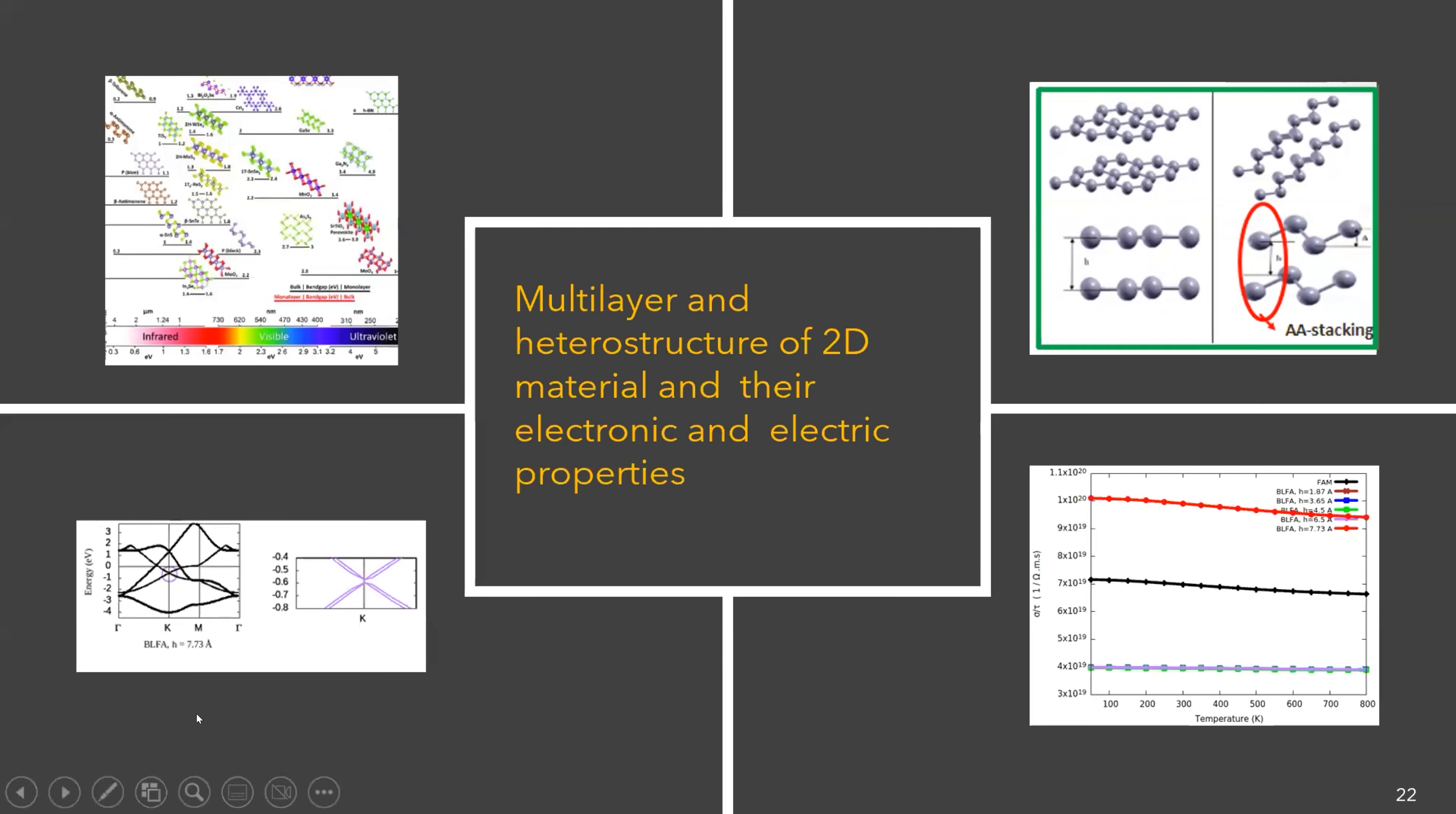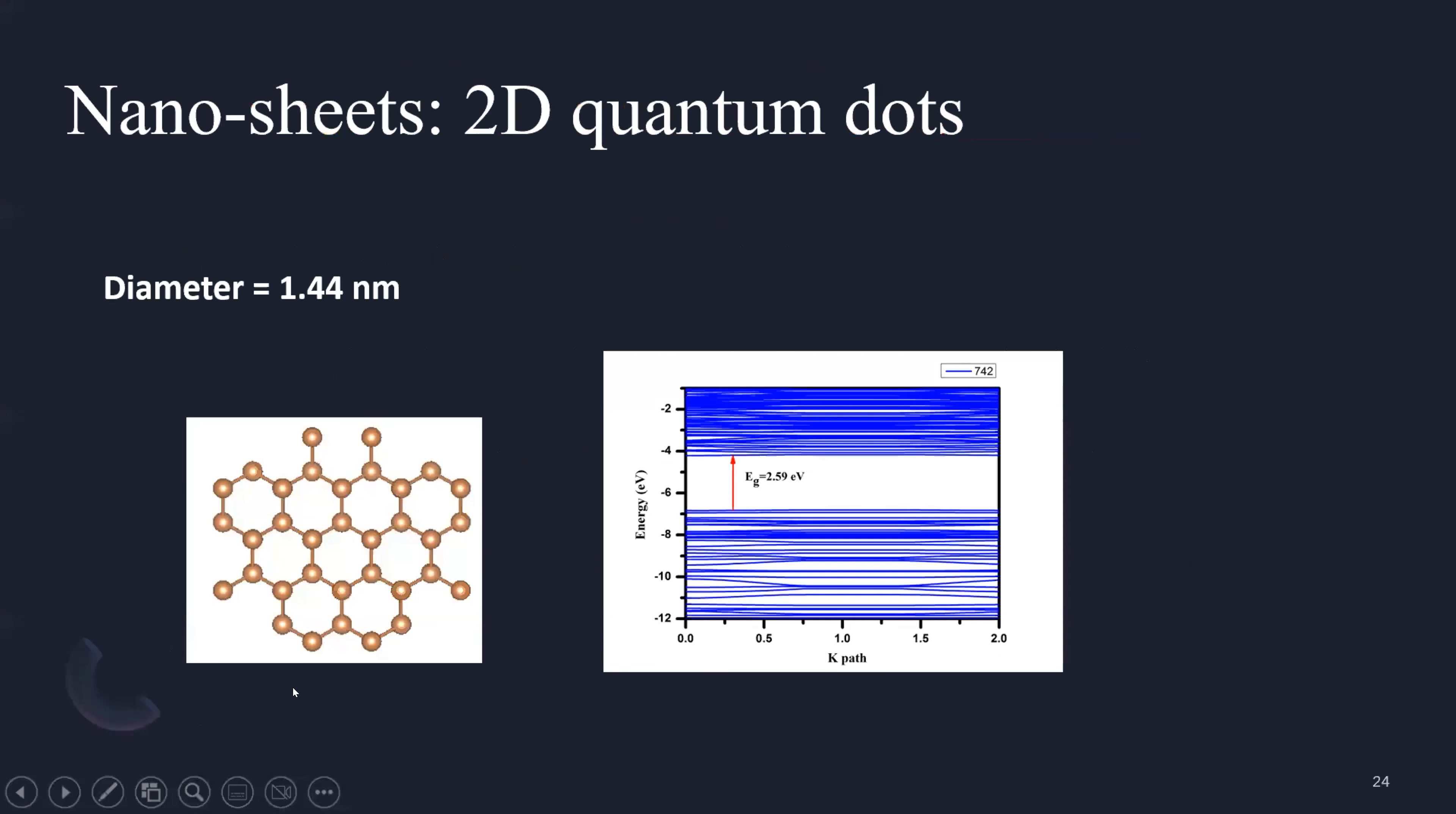2D quantum dots are also studied. We can see that the translation symmetry is lost for quantum dots of antimony. The energy gap is greater than in the case of a sheet, 2D materials.